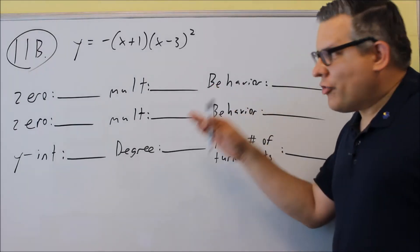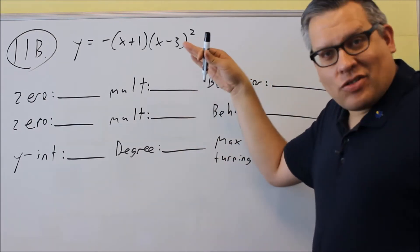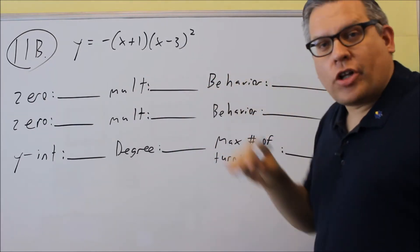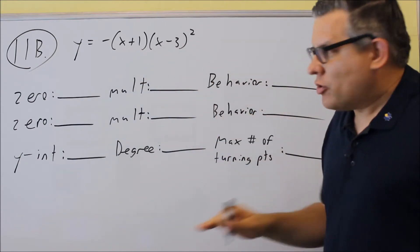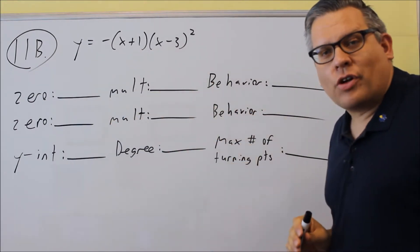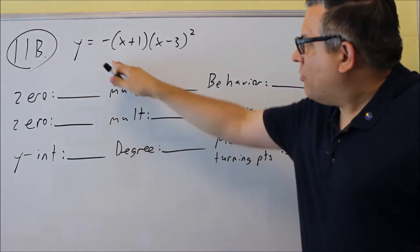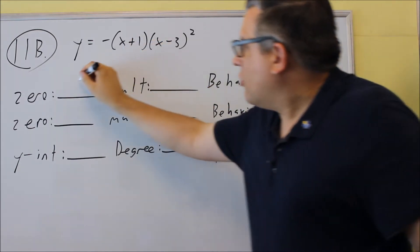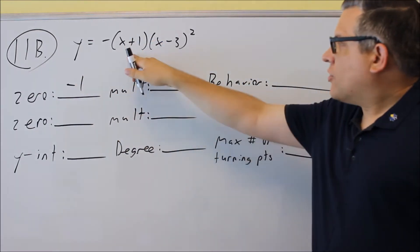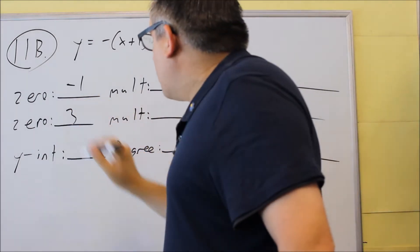Okay, so here's another one where we want to find the zeros and multiplicities. On the test, you're always going to have the correct number of blanks for how many zeros there are. Because there's only two pieces on this one, there's only two blanks for the zeros. So we'll start with those. A zero is what number will make that first part equal to zero inside the parentheses. So negative one will be the answer for that one, and then three will make this part equal to zero.